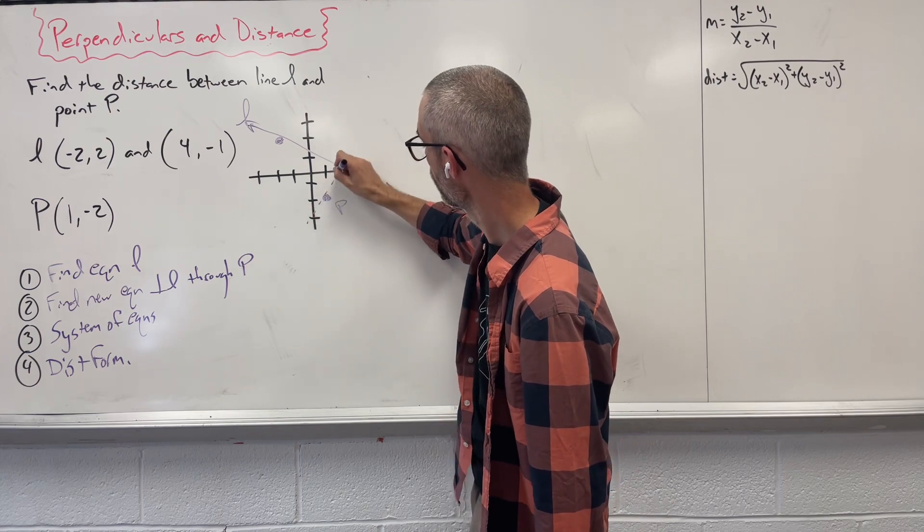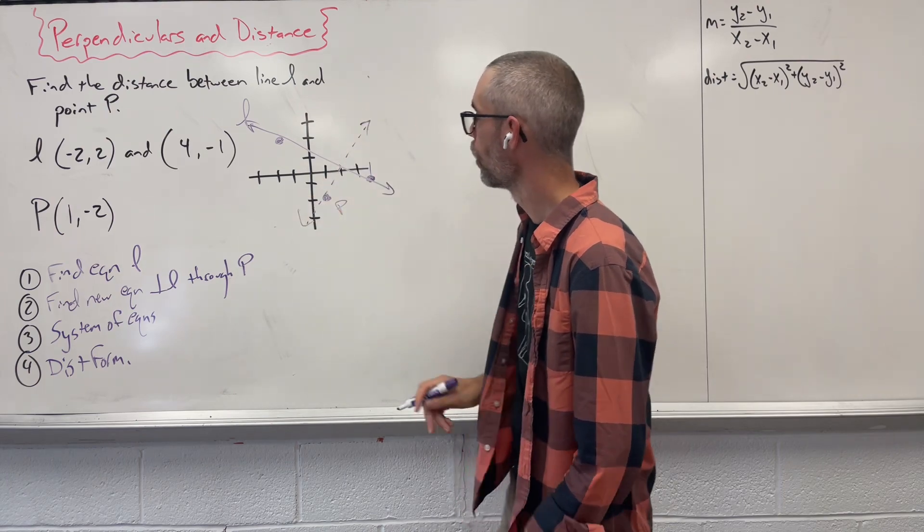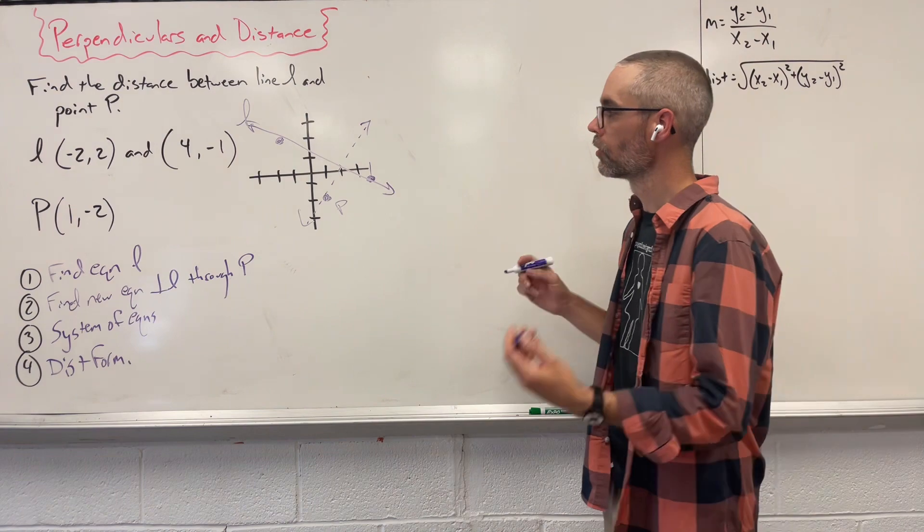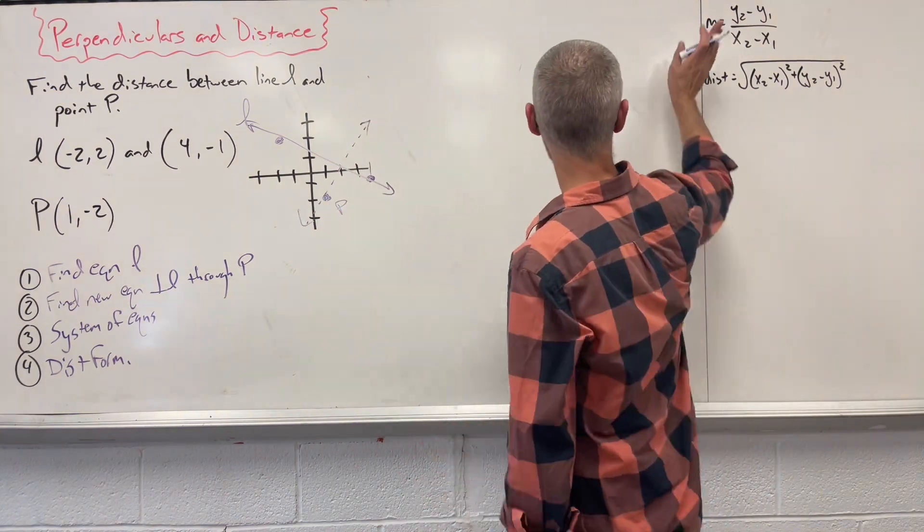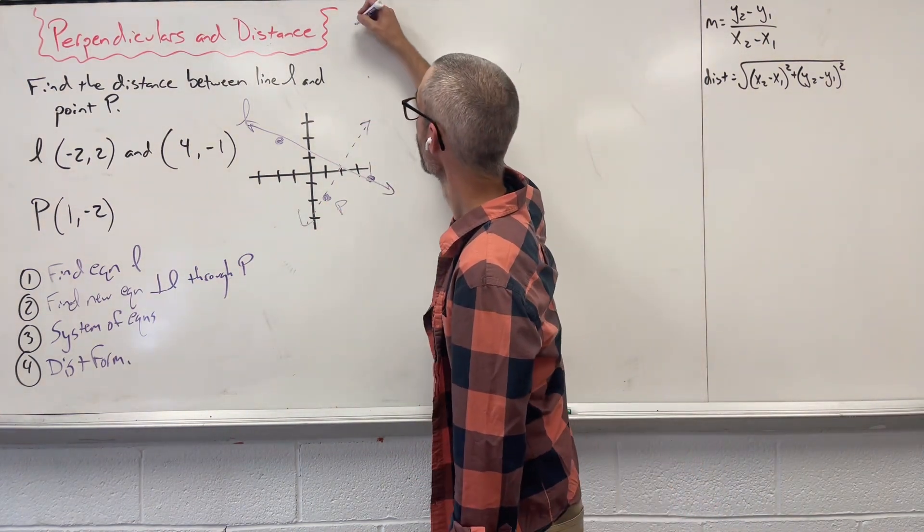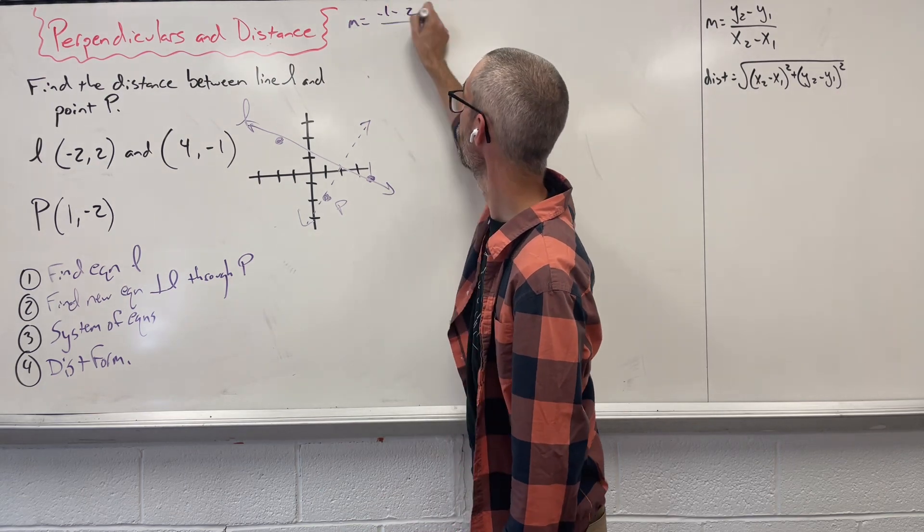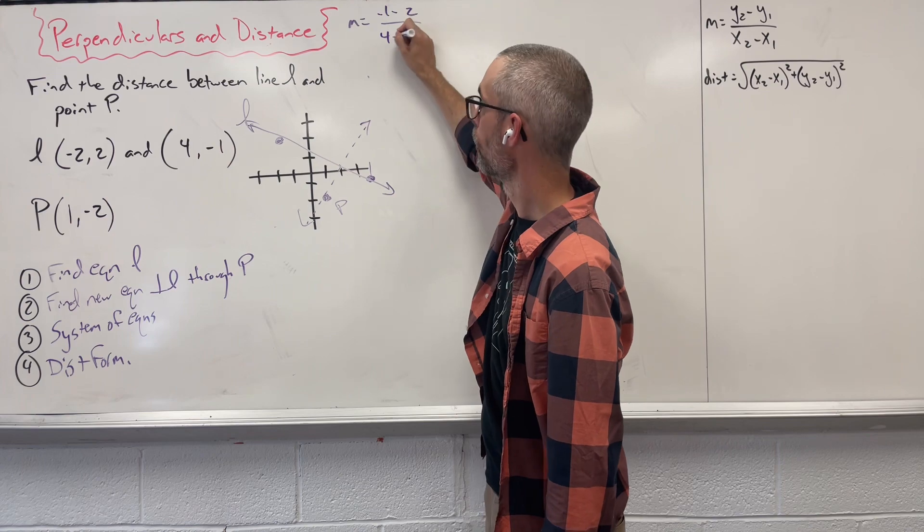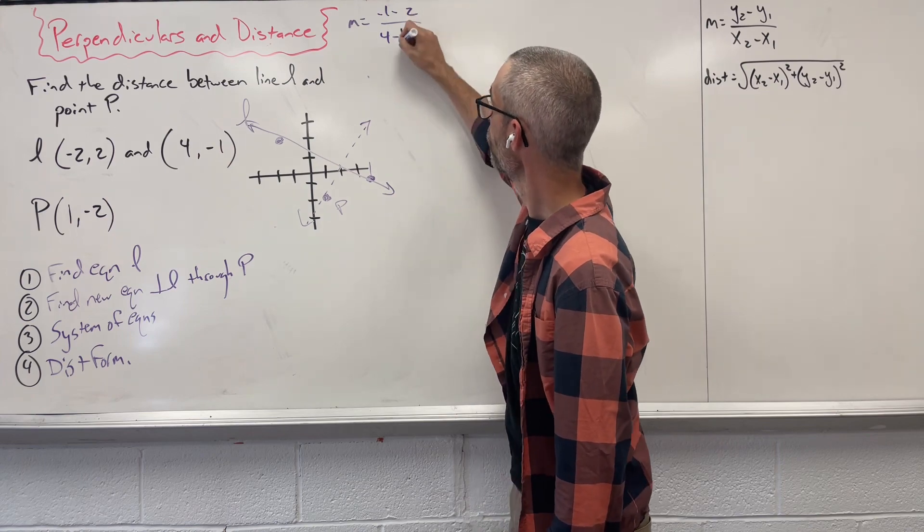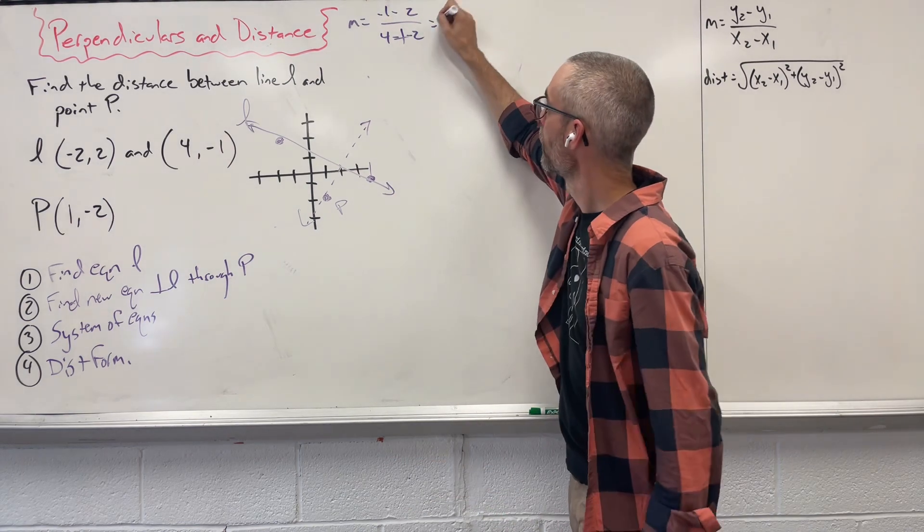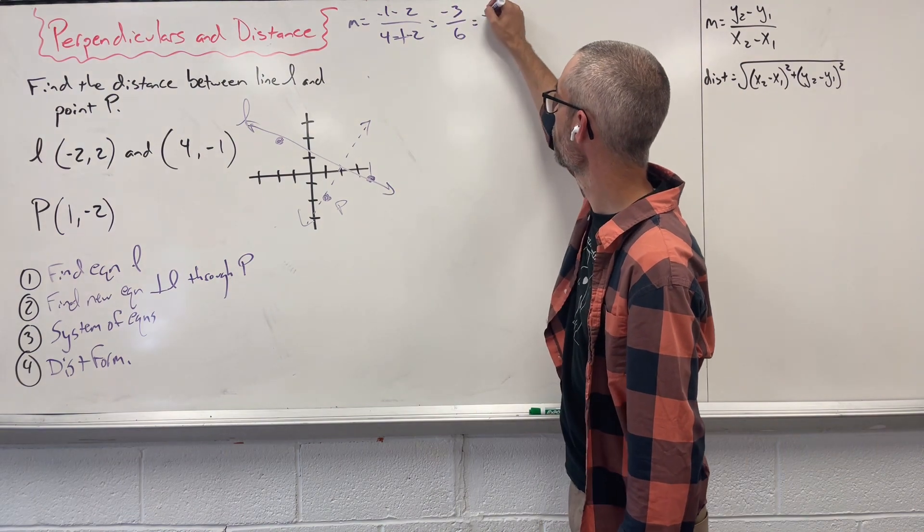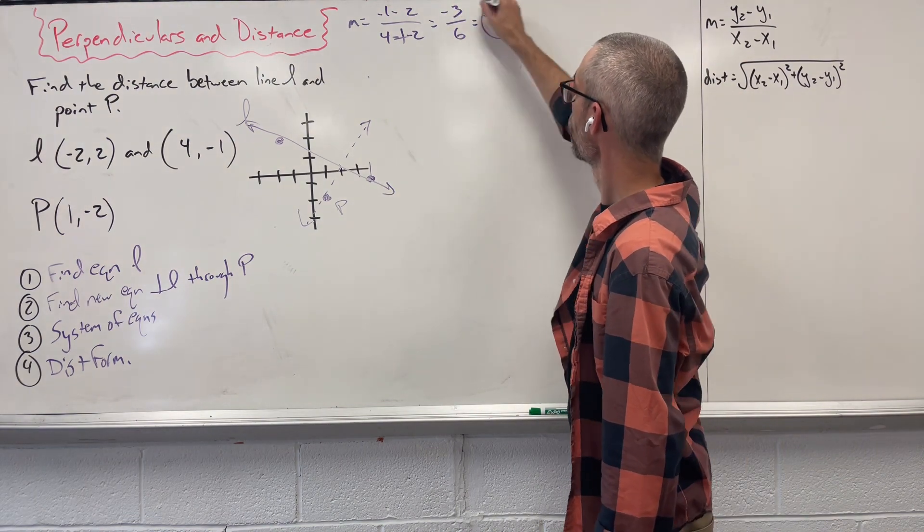And we want to figure out roughly what that dashed line is. So, in order to start off, let's figure out and use our slope. We're going to say M equals negative 1 minus 2 over 4 minus negative 2. Those two minuses on the bottom turn to a plus, giving us negative 3 over 6, which is the same as saying negative 1 half.